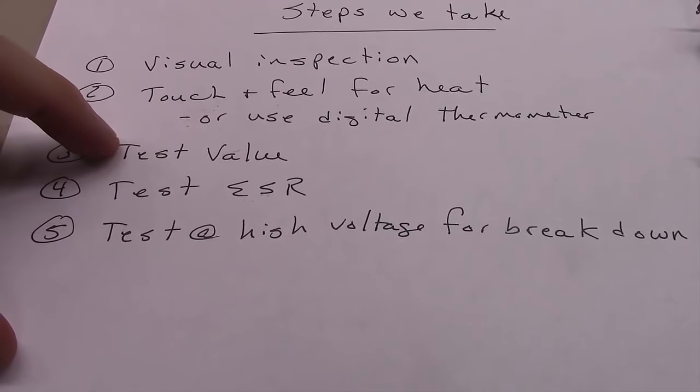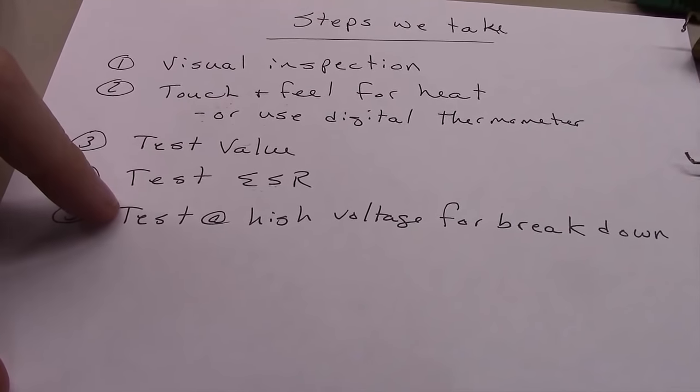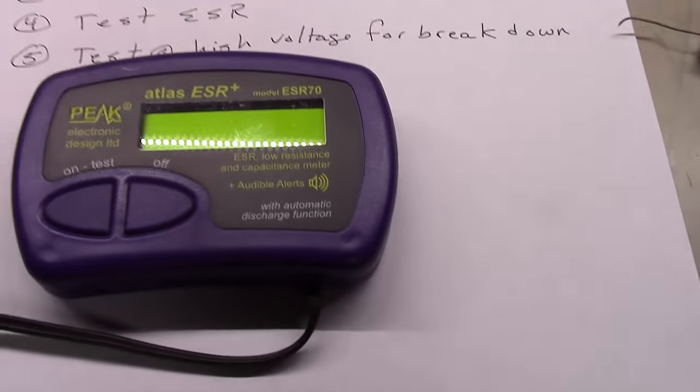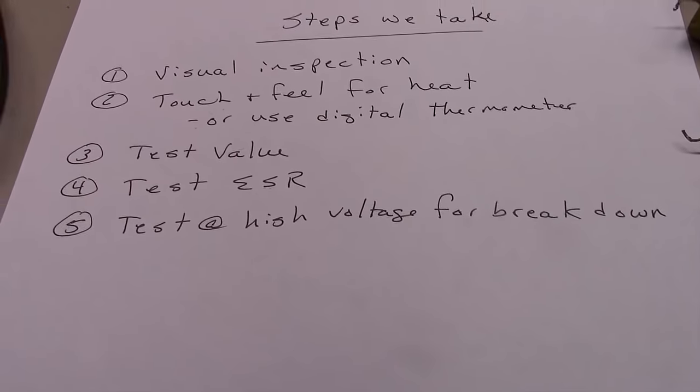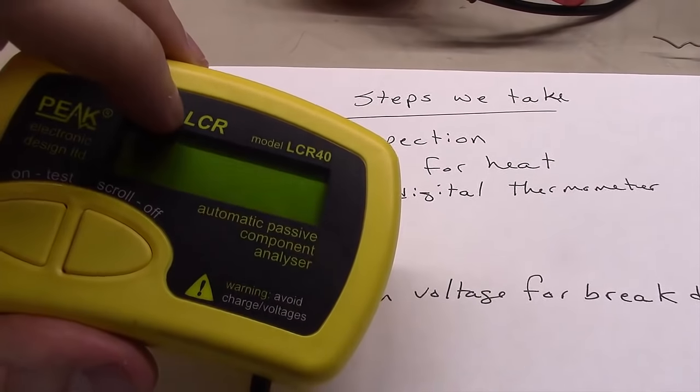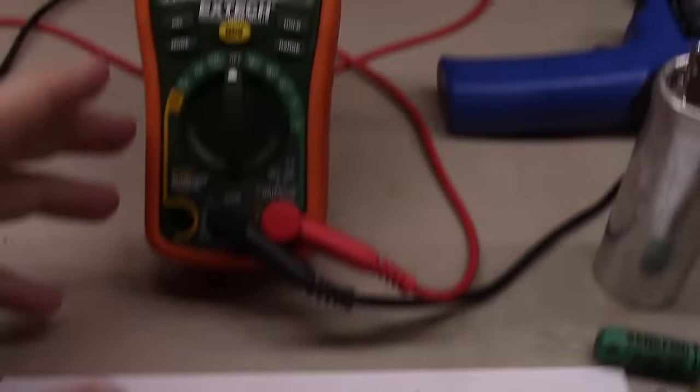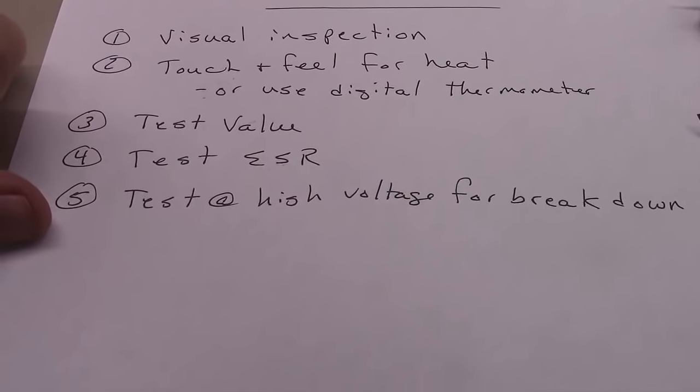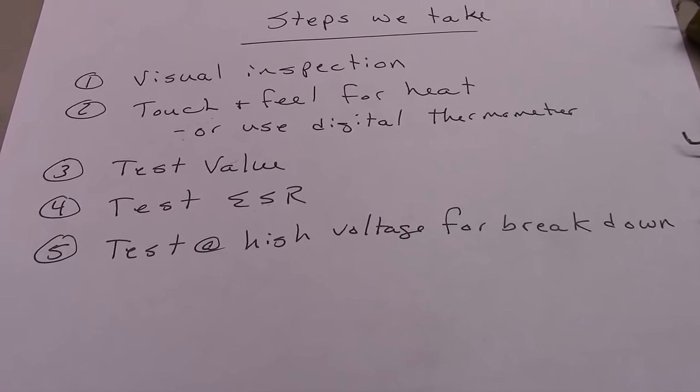Then this is where it all falls apart. You need to test the value, test the equivalent series resistance, and you need to test at a high voltage to see if this thing's going to break down. All the rage that these things are these days, I'm going to show you how this one cannot do all three of those. This is an LCR meter, inductance, capacitance, resistance meter. It cannot do all three of these. And this is just a plain old multimeter with the capacitance value on it. It cannot do all three of these.